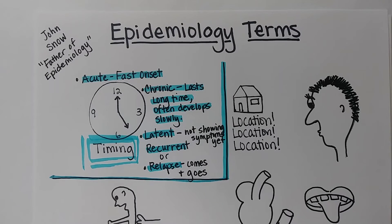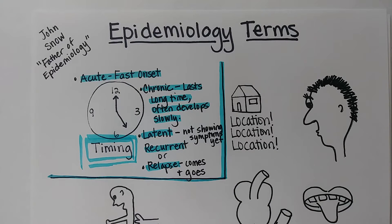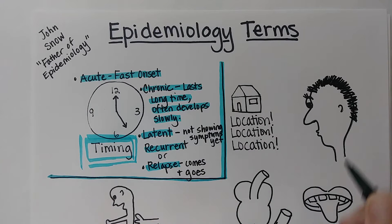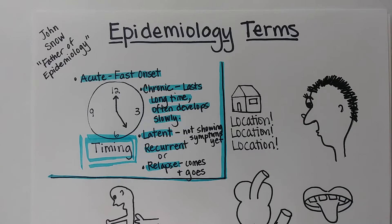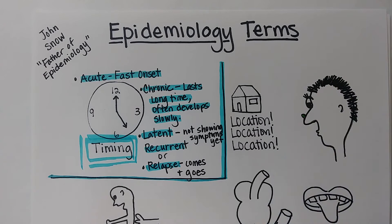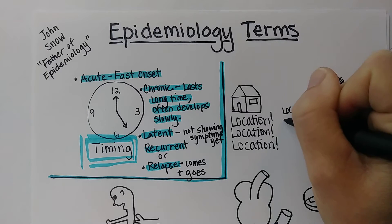So now the next category is like a real estate term — location, location, location. In this situation, we're going to give terms depending on where the infection is occurring in the body. For example, if a person had a pimple on their skin, this is a perfect example of a local infection — it's contained in one place.